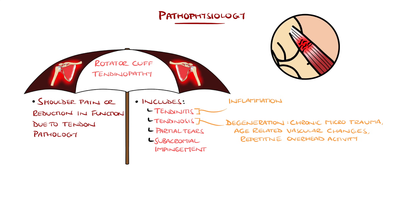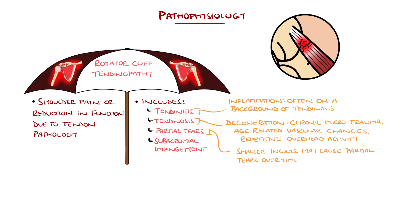Tendinitis represents inflammation of the tendon, often on a background of tendinosis. Acute macrotrauma can produce sudden full thickness tears, and smaller repetitive insults may cause partial tears over time. Tendon degeneration predisposes to tears with lower traumatic force.